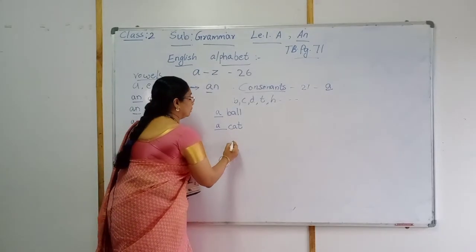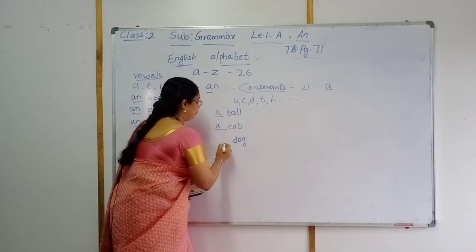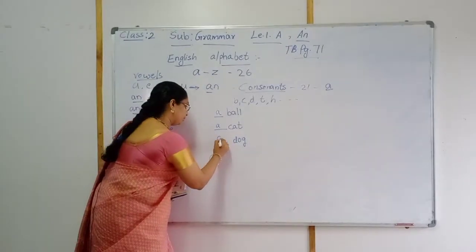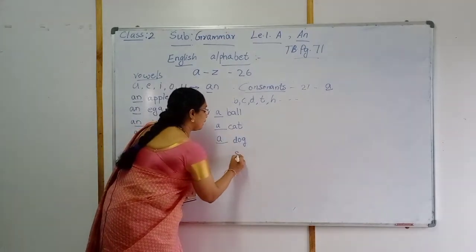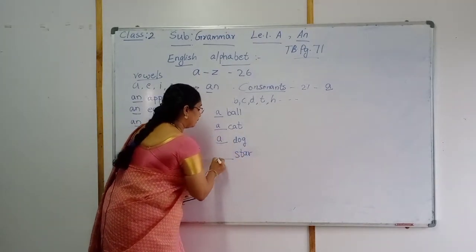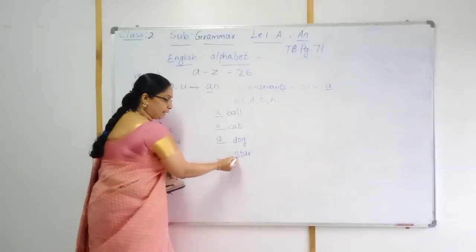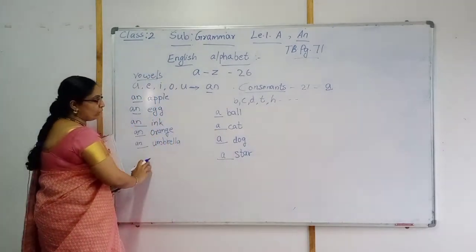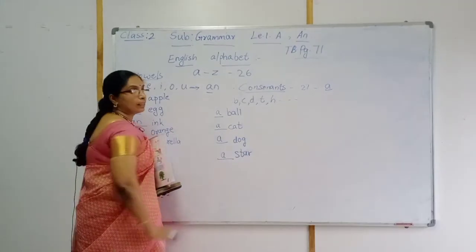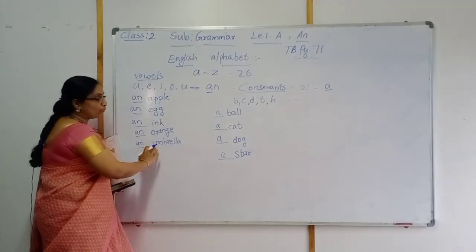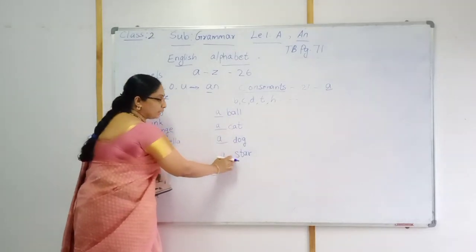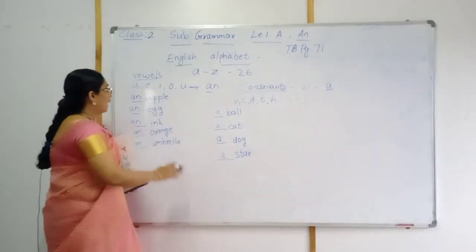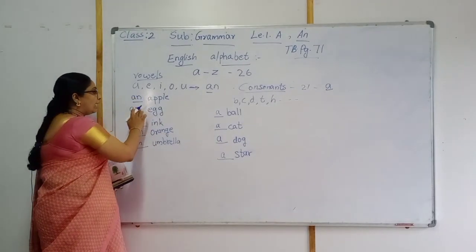Next — dog. First letter D, so A dog. Then, star — S-T-A-R. First letter S, so A star. These are vowels and these are consonants. When the first letter is a vowel sound, we use AN. When the first letter is a consonant sound, we use A. That's why we use A for consonants and AN for vowels.